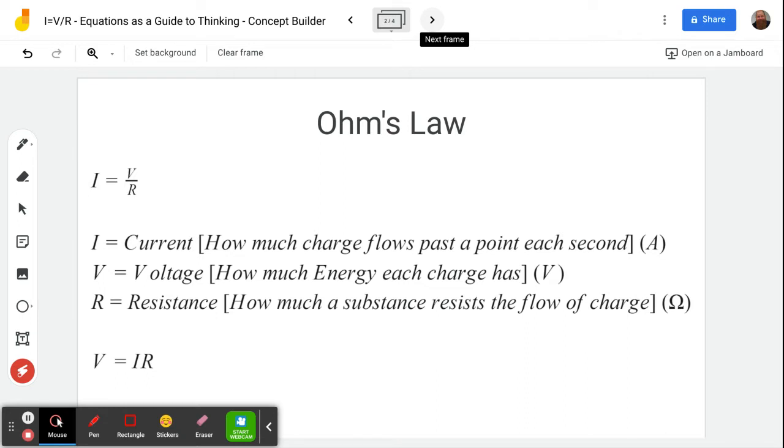Let's just review quickly what Ohm's law is. I equals V over R. I equals the current, which is how much charge flows past a point each second, which is amperes, also known as coulombs per second.